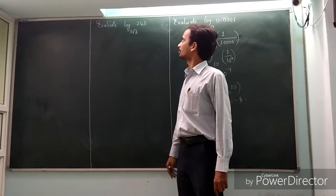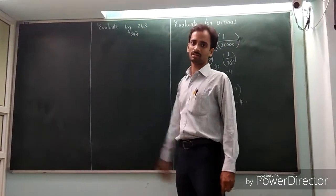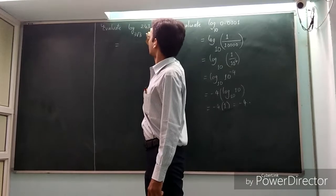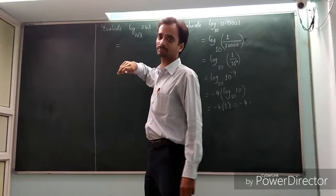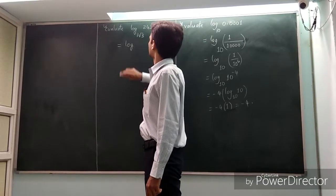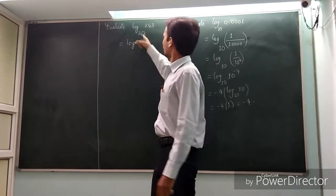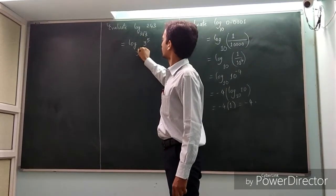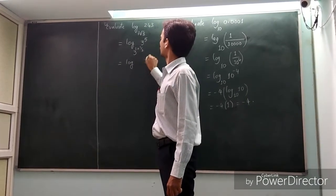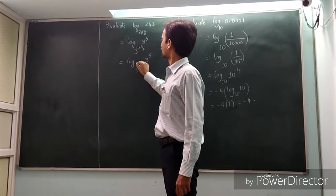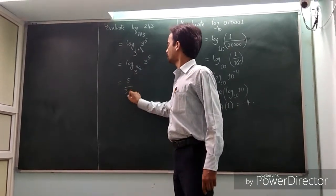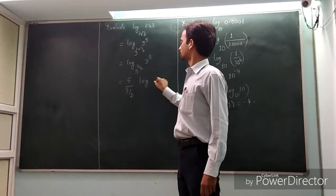Let us evaluate log of 243 to the base 3 root 3. If we can write 243 in powers of 3 and the base 3 root 3 in powers of 3, then we can evaluate easily. So 243 can be written as 3 power 5, and 3 root 3 can be written as 3 power 1 plus half, that is 3 power 3 by 2. So this becomes log 3 power 5 to the base 3 power 3 by 2, which gives 5 divided by 3 by 2, times log 3 base 3.